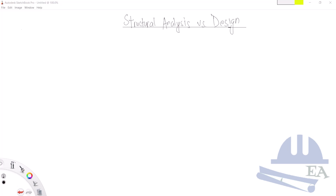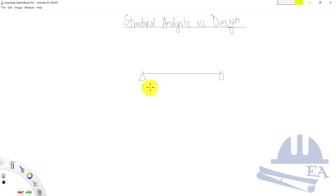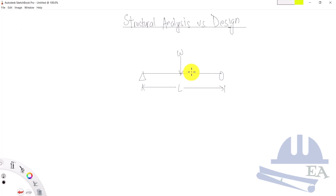Let's start with structural analysis. To describe structural analysis, I'll use an example of a simply supported beam. I'll draw a beam with a hinge support at one end and a roller support at the other end. The span of this beam is L, and there is a point load W at the center. Let's assume this beam has no self weight.